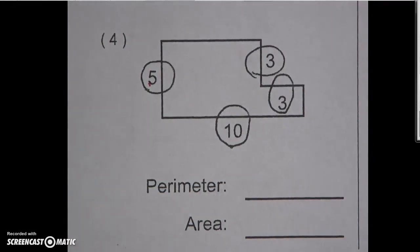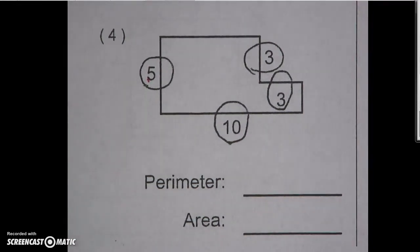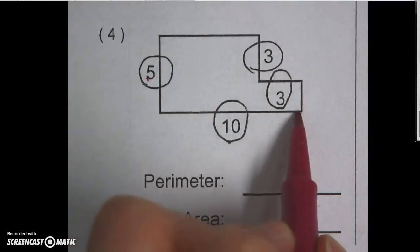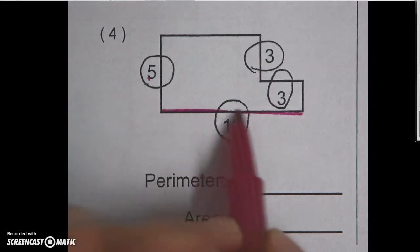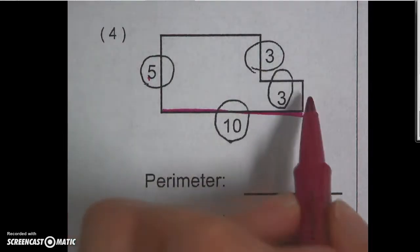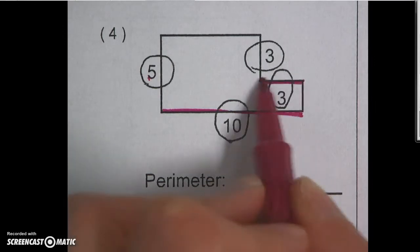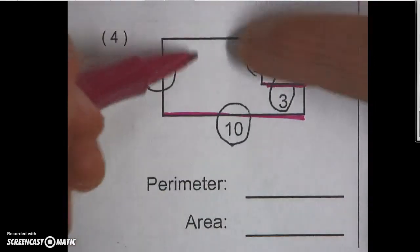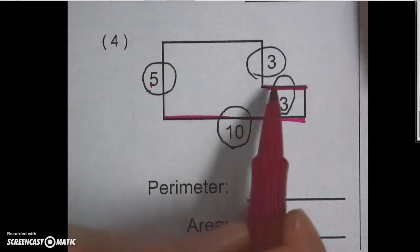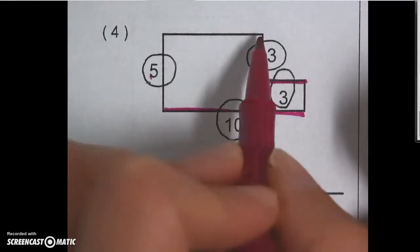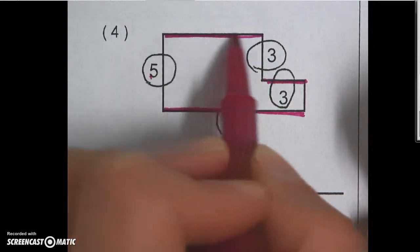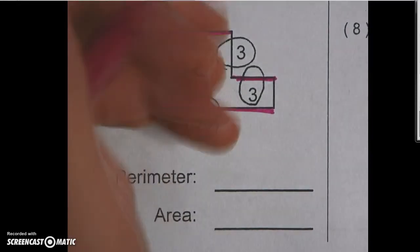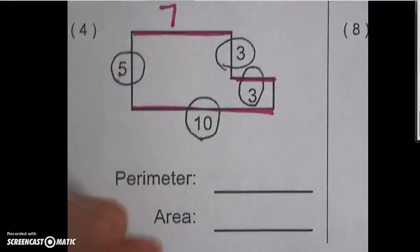So the first thing that you need to do is find the missing side lengths that you don't have. I know that this whole side going across the bottom is 10, and then I was told that this side right here was 3. Really if this were to be scrunched back down, this part would make the other part of that side. So 3 plus 7 would give me 10. So that missing side is 7.